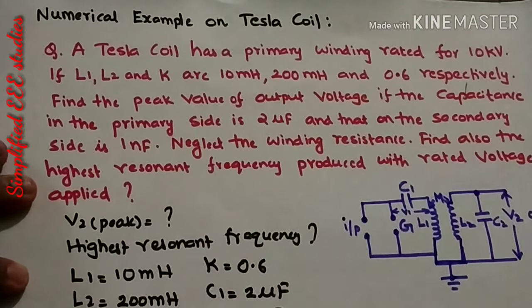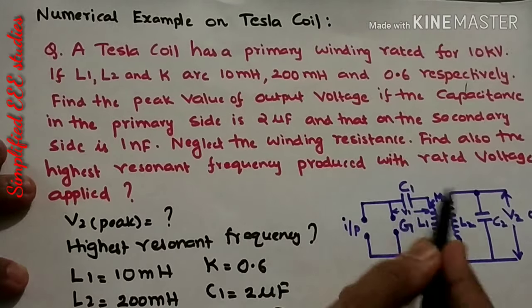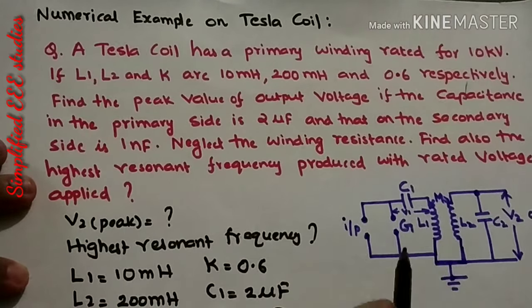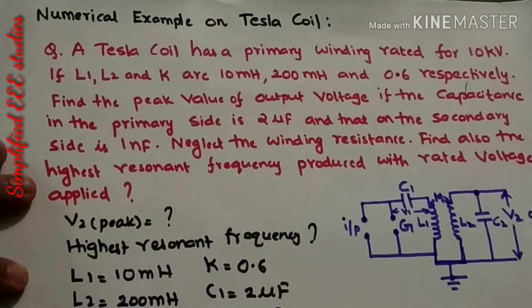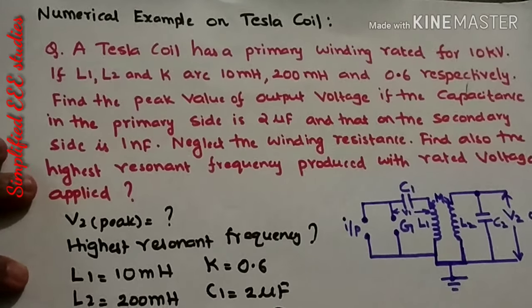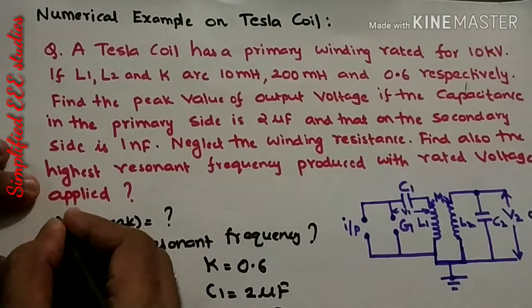It is advisable to draw a diagram of the Tesla coil as shown in the paper. I already explained how a Tesla coil operates. Please draw the same diagram once again — you will get more credit in the exam. Now let us solve how to calculate V2 peak, that is the peak value of output voltage, and the highest frequency produced.